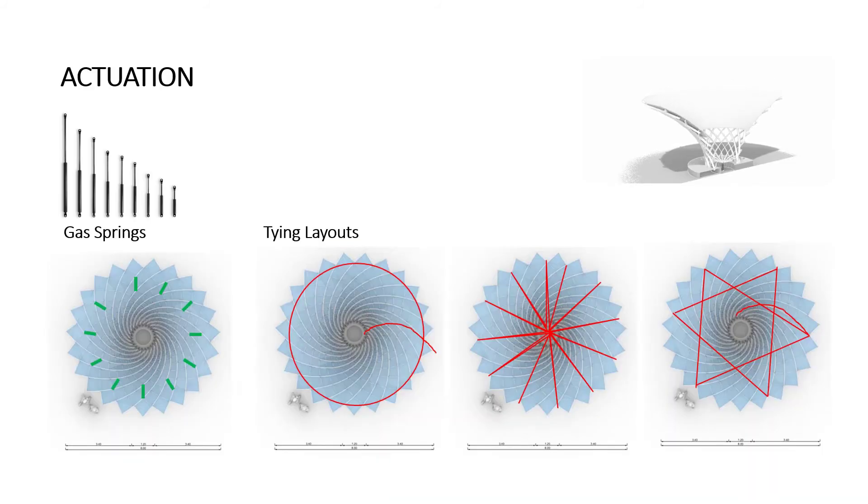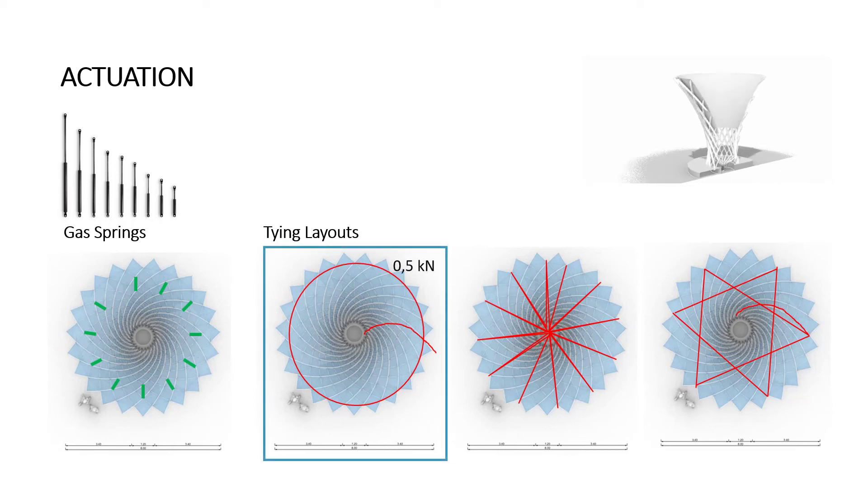Once the structure is set up, it will serve as a testing field for actuation systems. We are focusing on actuation systems including tying or pushing using cables or linear actuators respectively. Therefore, connections at the nodes are held available to be easily changed and investigated. To close the umbrella, a total mass of about 400 kg has to be partly lifted. If we provide a single tying system at the outer diameter exemplarily, a cable force of about 0.5 kN or 50 kg is necessary.